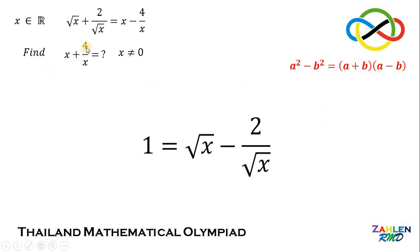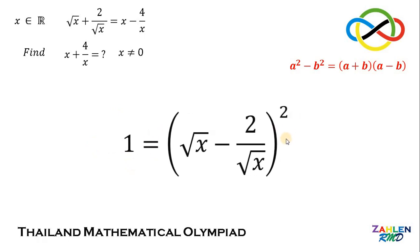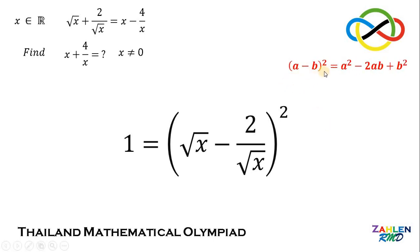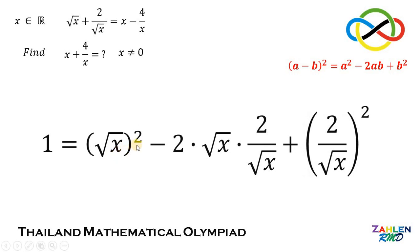Now, don't forget our goal: to find the value of x plus 4 over x. The question is, how do we achieve this form? What we're going to do is square both sides. On the left-hand side, we have 1 squared, which is just 1. On the right-hand side, we will use the identity: a minus b, quantity squared, equals a squared minus 2ab plus b squared. Therefore, we have square root of x, quantity squared, minus 2 times square root of x times 2 over square root of x, plus 2 over square root of x, quantity squared.